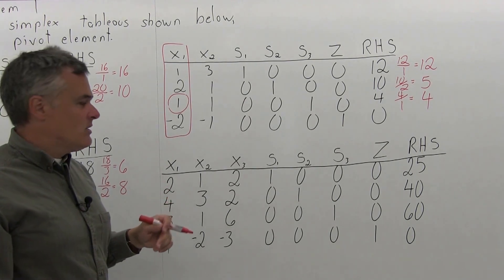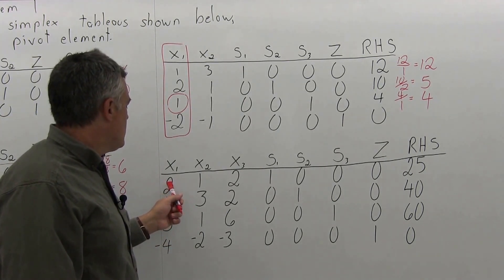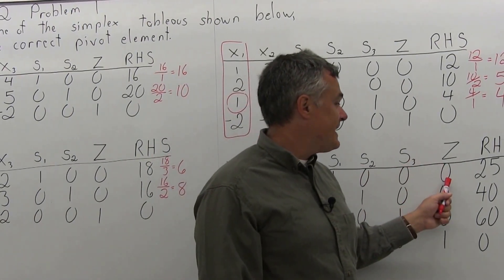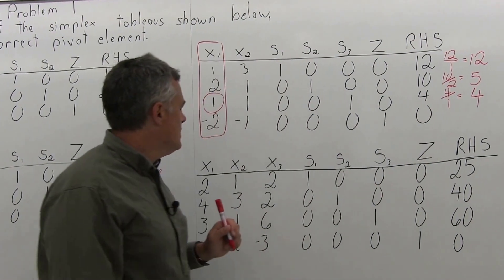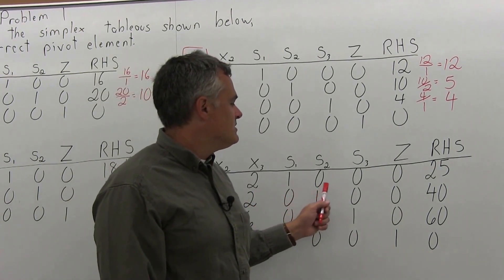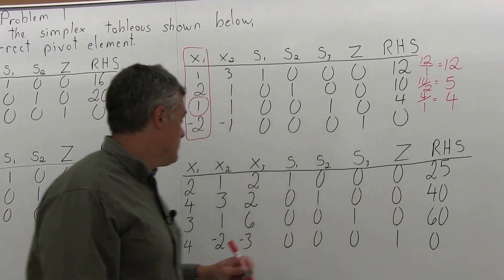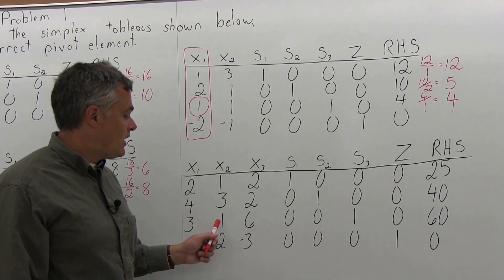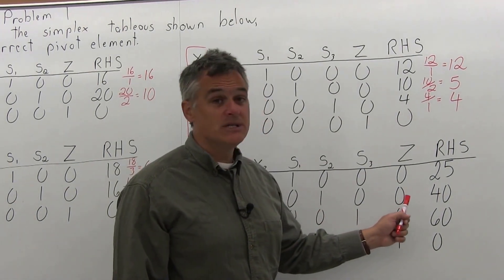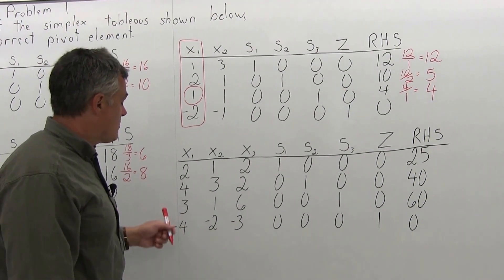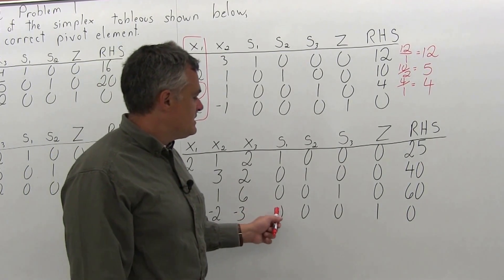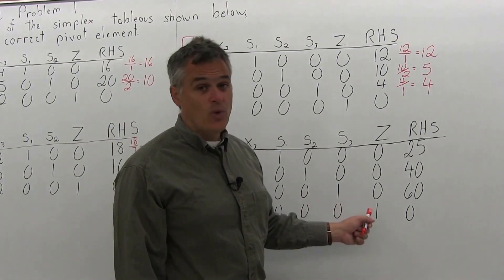The next tableau also has 4 rows. The top row is 2, 1, 2, 1, 0, 0, 0, 25. The second row is 4, 3, 2, 0, 1, 0, 0, 40. The third row is 3, 1, 6, 0, 0, 1, 0, 60. And the bottom row is negative 4, negative 2, negative 3, 0, 0, 0, 1, 0.